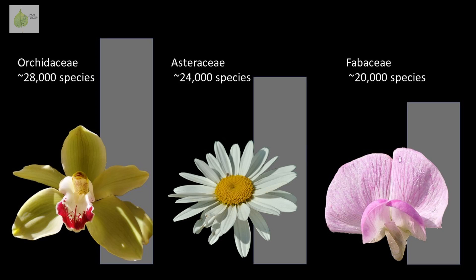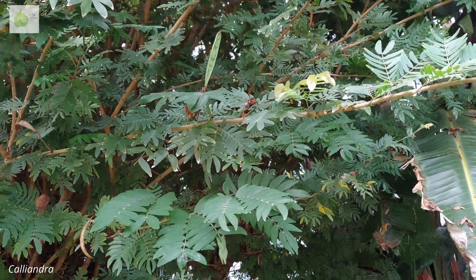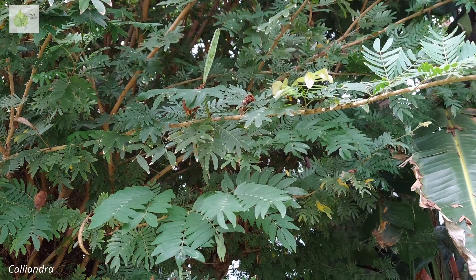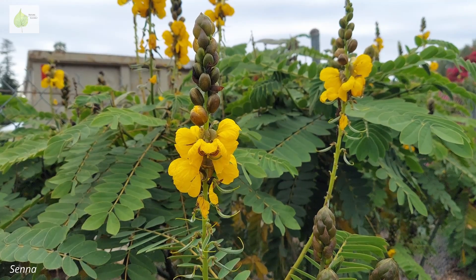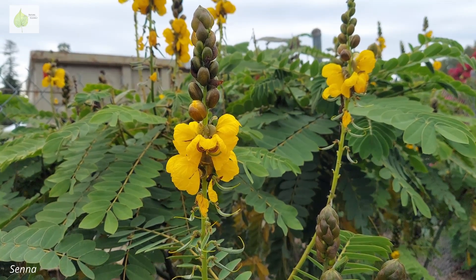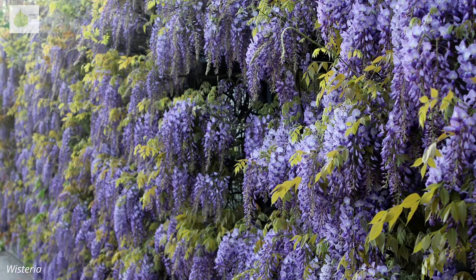With around 20,000 species, Fabaceae is the third largest plant family, right after Orchidaceae and Asteraceae. There is a lot of variation in appearance across its members. Their growth form goes from trees and shrubs, through to climbing herbs with tendrils, to small annuals.